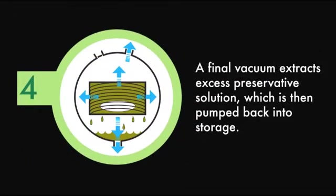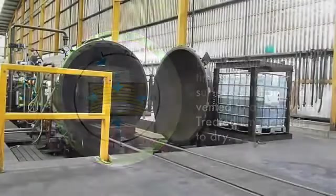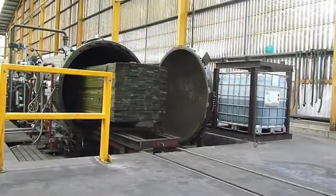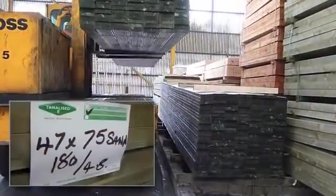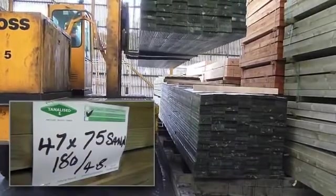A final vacuum extracts any excess preservative solution, which is then pumped back to storage. The vessel is finally vented to normal atmospheric pressure, and low pressure inside the timber draws in the surface preservative solution. The cylinder is then opened and the treated timber is removed and left to dry in a designated drying area. The treated packs are usually labelled to clearly identify the new value added product.